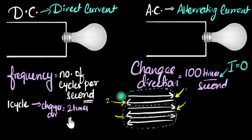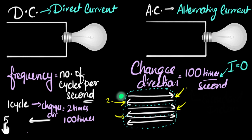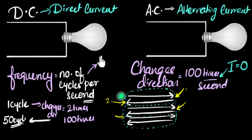So if the electron changes direction 100 times, how many cycles is that? Notice the number of cycles is half the number of times the direction changes. So if the electron is changing its direction 100 times, that means it must be going through 100 divided by 2 — 50 cycles. So in this case, the frequency is 50 cycles per second.